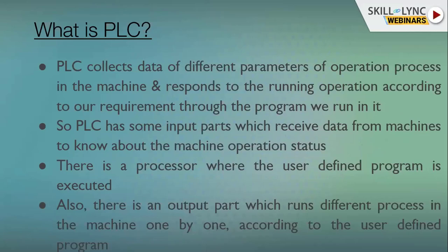When we use PLC in industries, it has provision to collect data from different parameters — machine operation inputs — and it uses a user-defined set of commands and instructions to decide what to do next in the operation. The PLC decides how to move forward based on those user-defined instructions. For that we have a processor where we run our PLC program, and we have output parts linked with output devices on the field side at the machine.